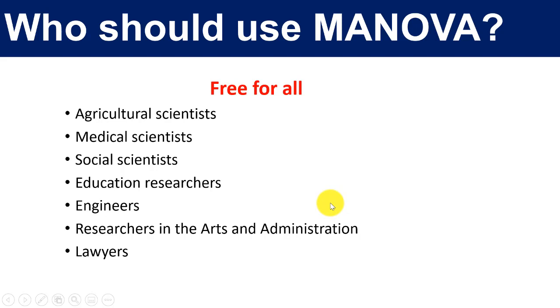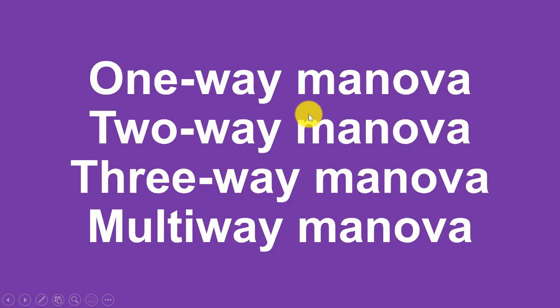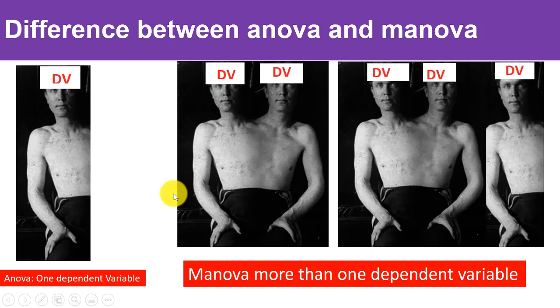Who should use MANOVA? Everybody — agri-scientists, medical scientists, social scientists, educators, engineers, researchers in arts, administration, lawyers — everybody. The mathematical models are the same across disciplines. Just as you have a one-way ANOVA with one independent variable, you also have one-way MANOVA, two-way MANOVA, three-way MANOVA, and multi-way MANOVA — meaning four, five, six, or more factors.